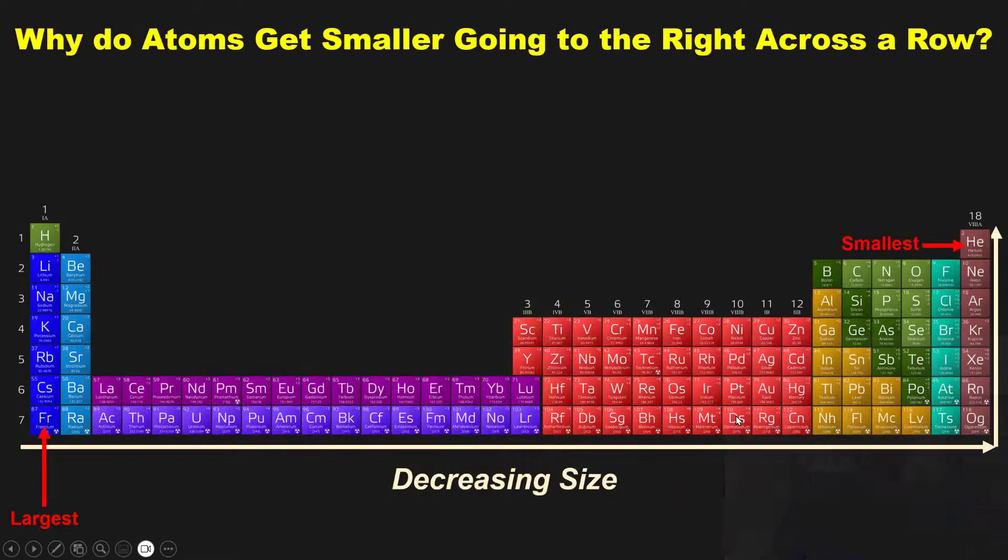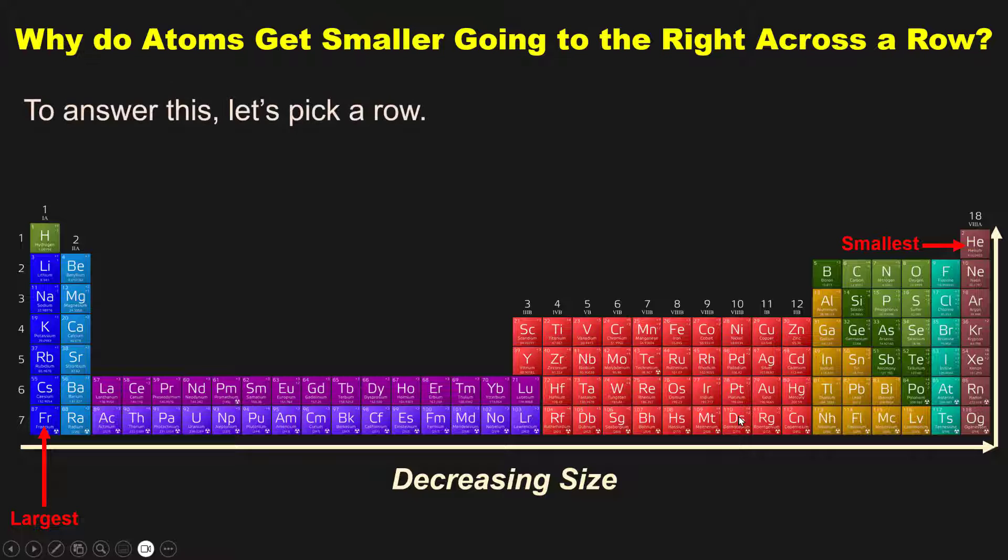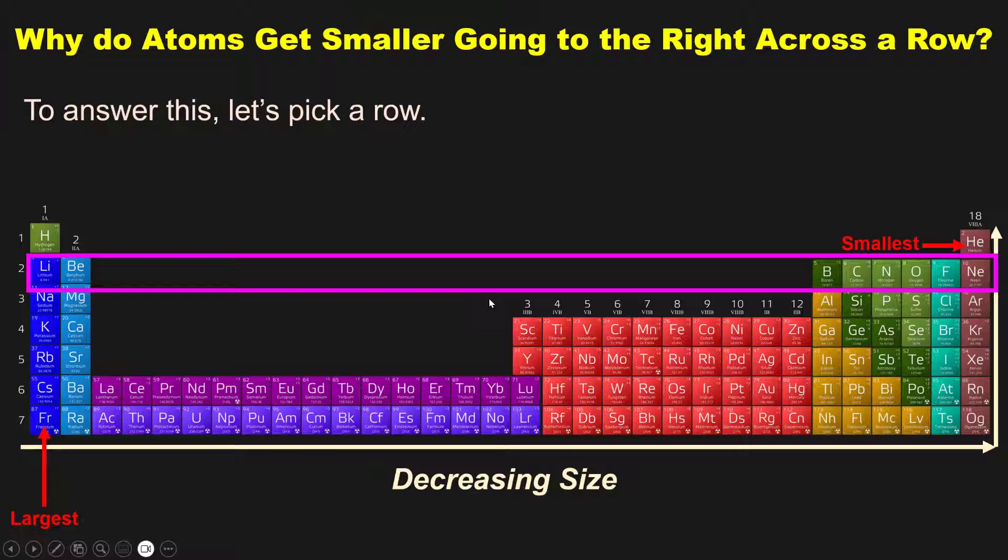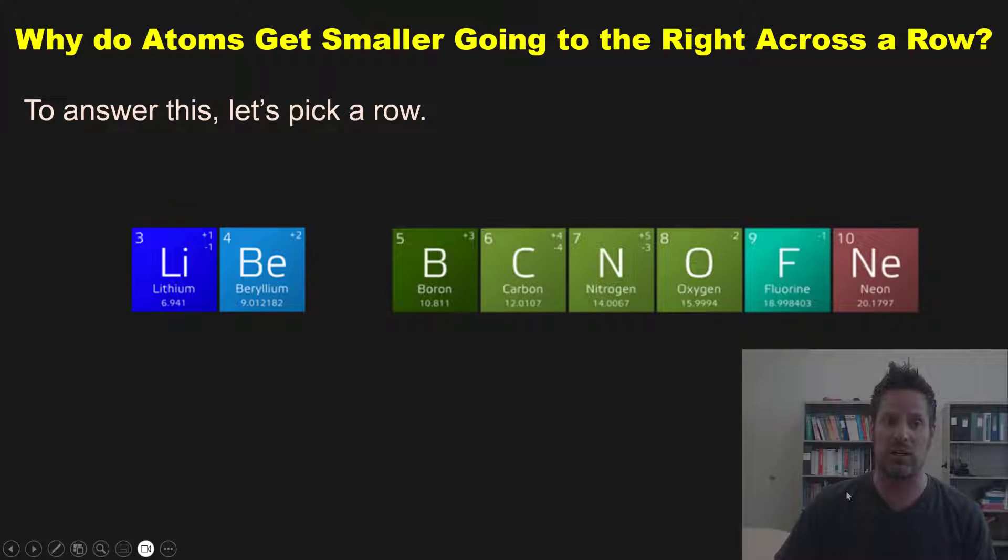This begs the question then, why in the world do atoms get smaller as you go to the right across a row? To answer this, let's just pick a row. I'm going to grab the lithium row right here in this pink box and zoom in on it more closely.